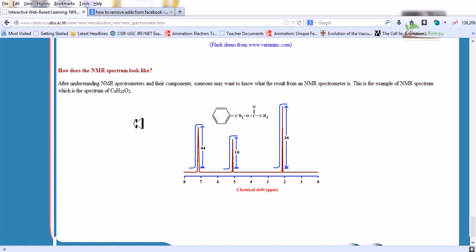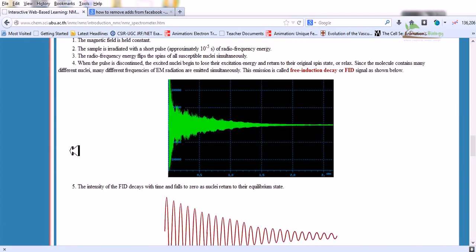How does the NMR spectrum look like? After understanding NMR spectrometers and their components, someone may want to know what the result from the NMR spectrometer is. This is the example of NMR spectrum, which is the spectrum of C9H10O2. As you can see here, their chemical shift occurs at different PPM concentrations. We can find the NMR spectrum at different levels.